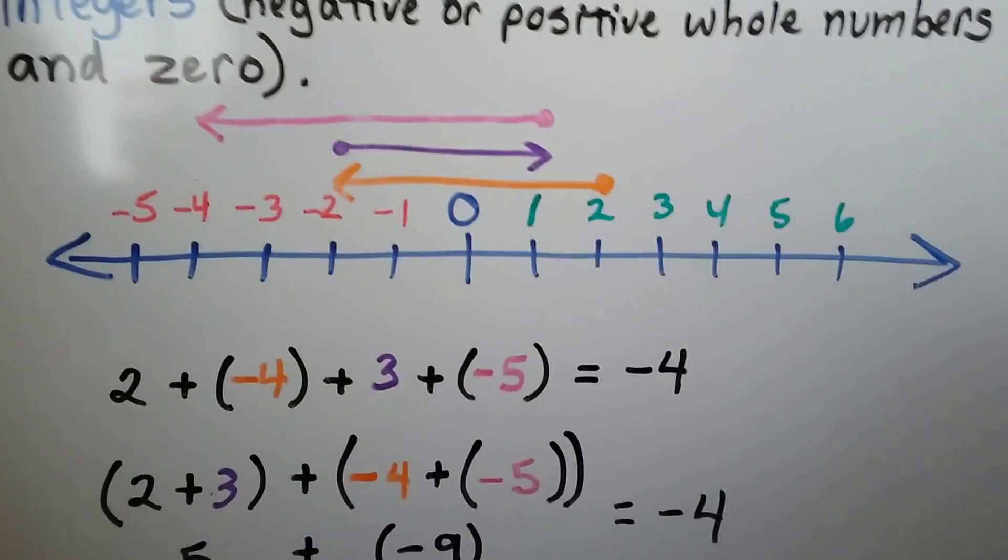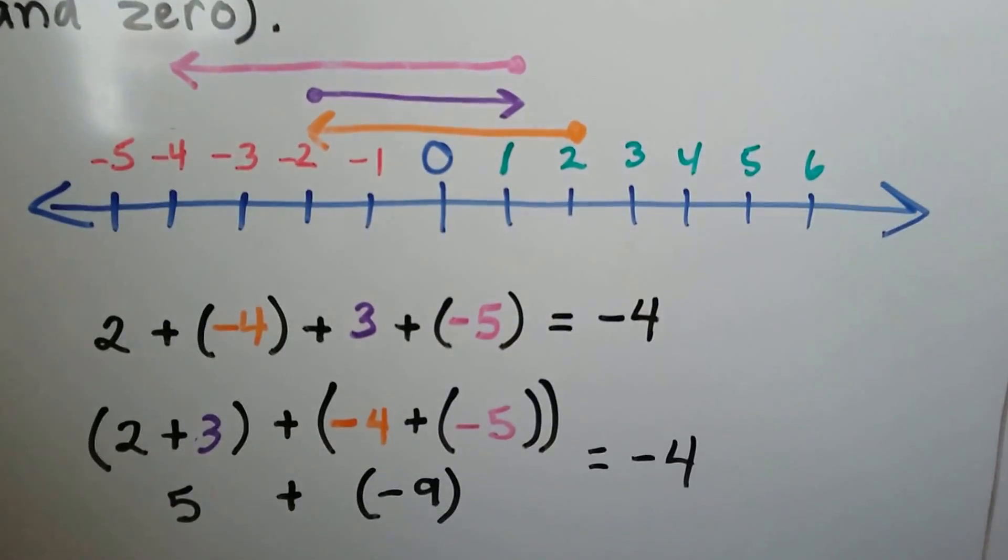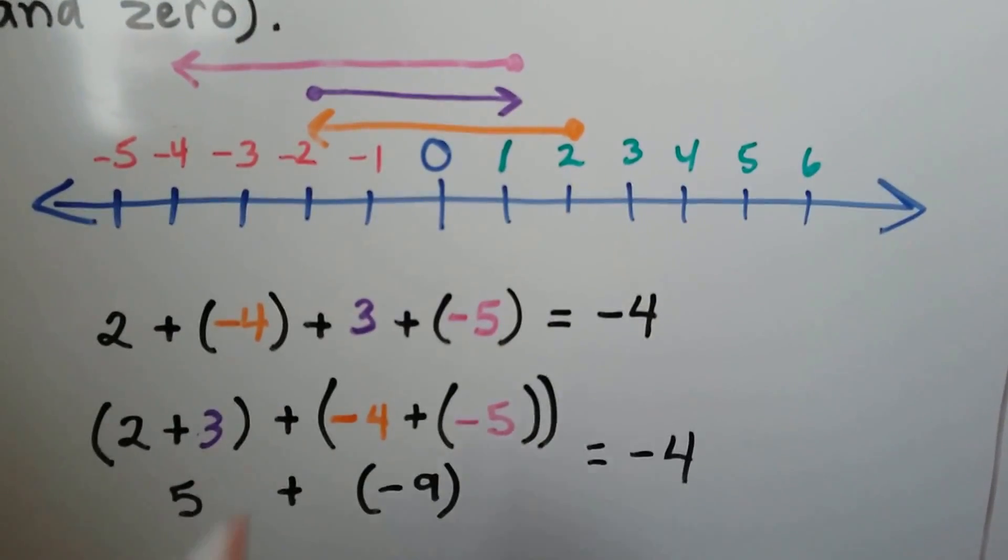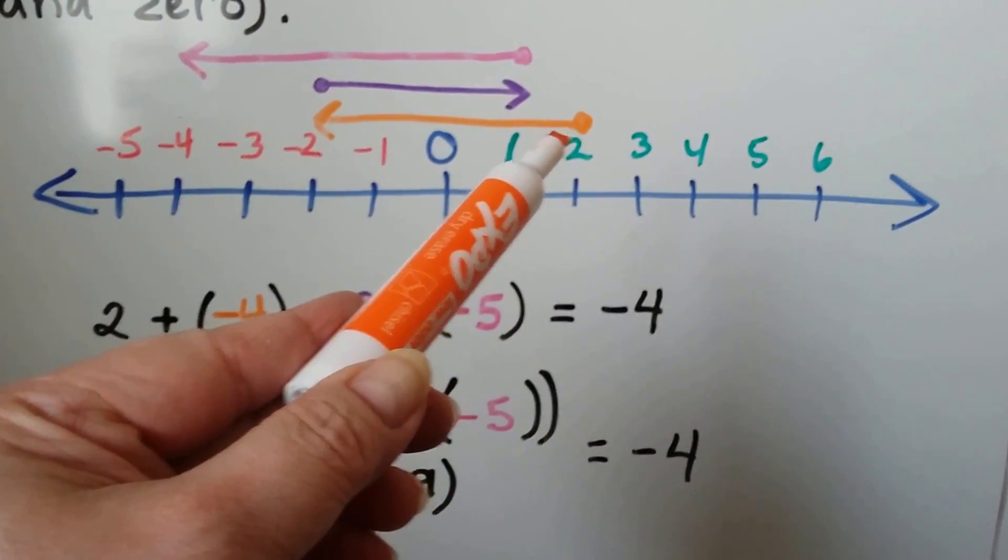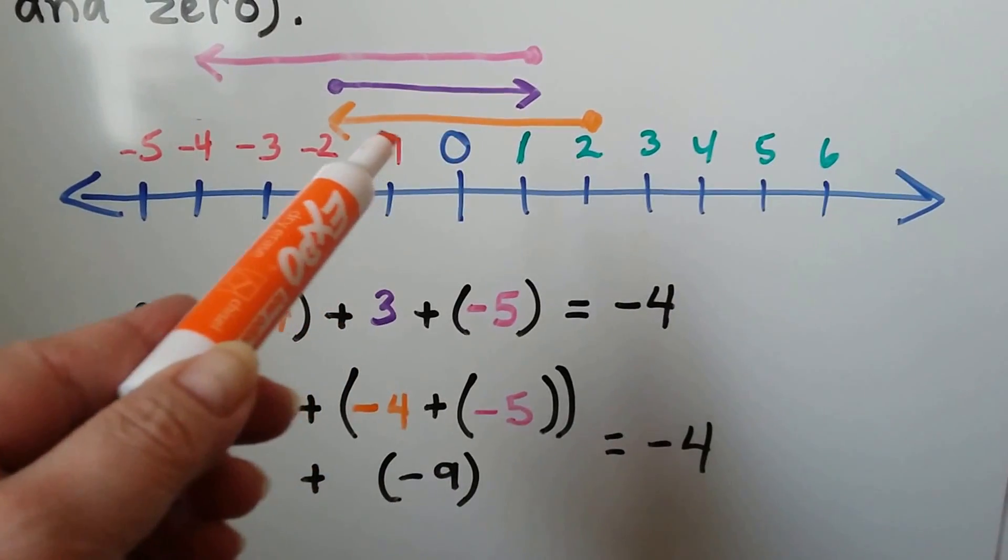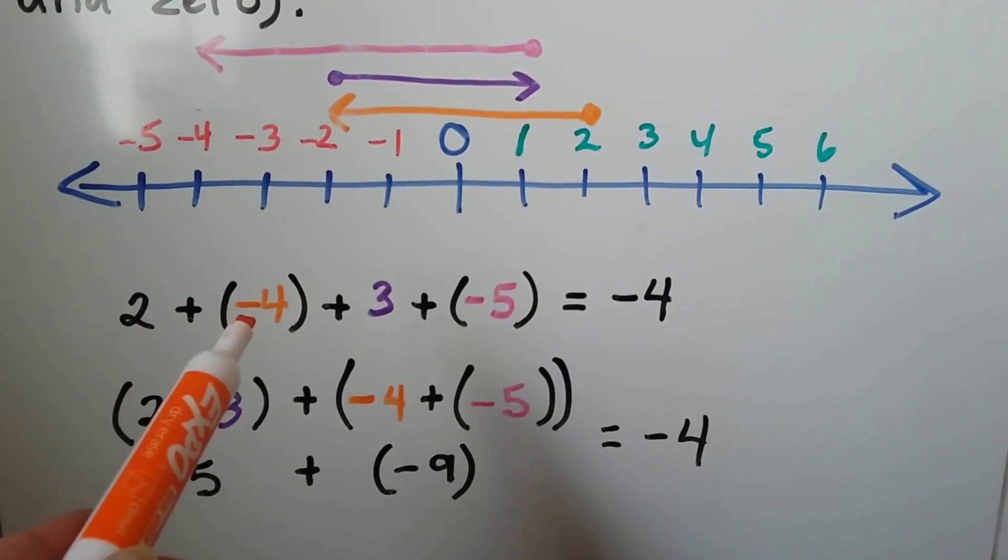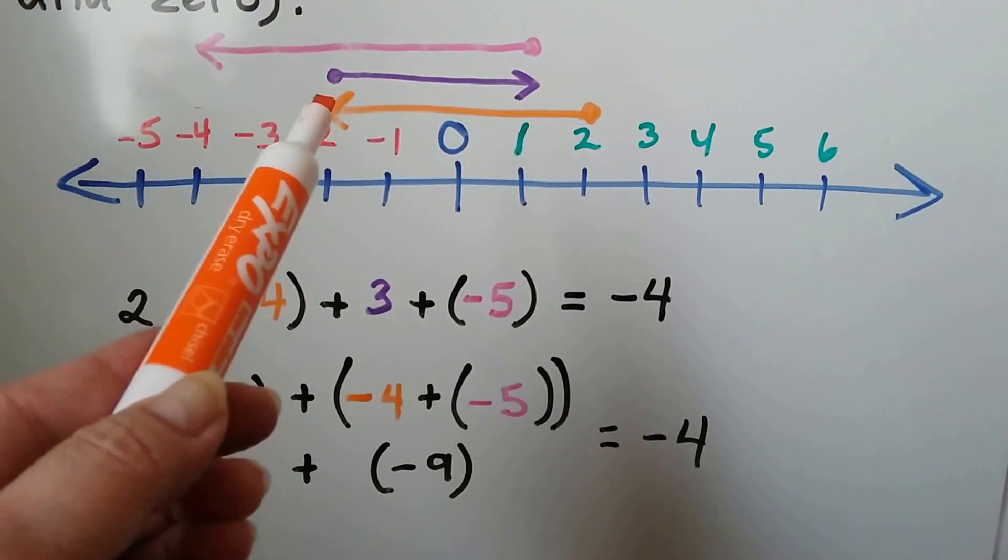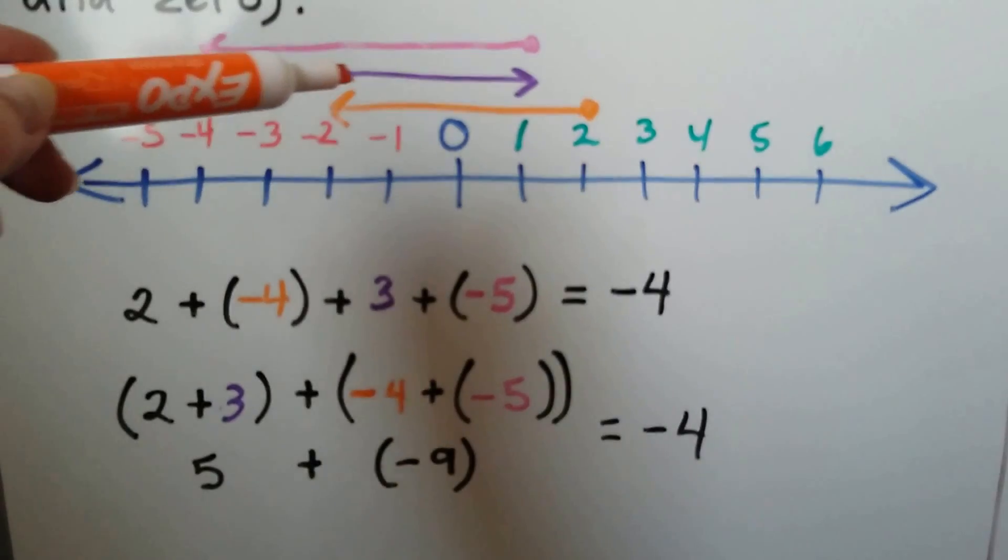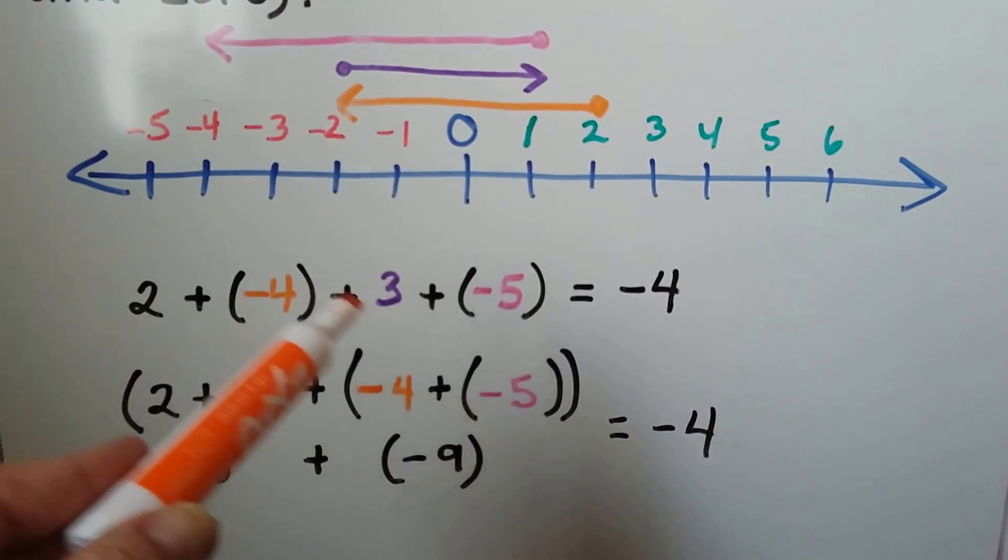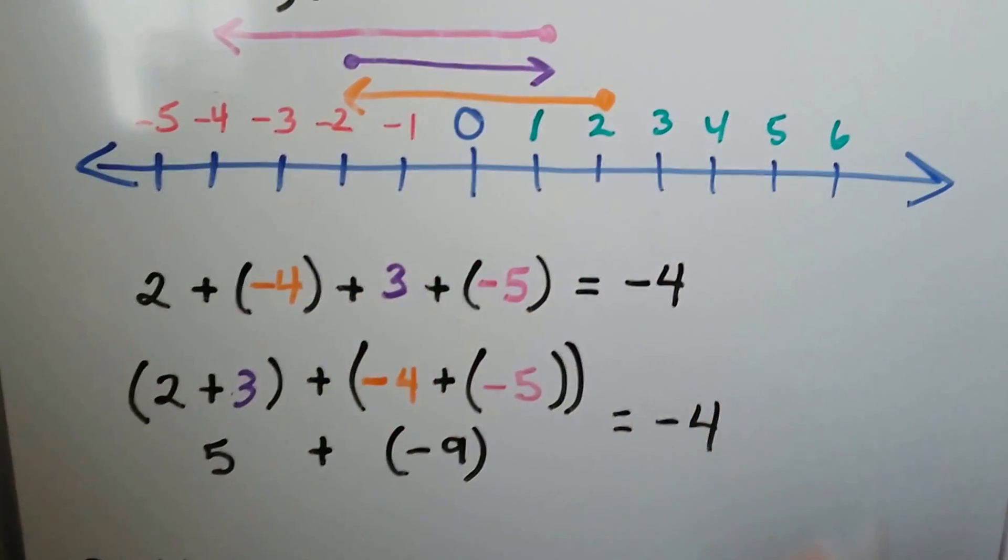So here we've got a number line and you can see I've got some colorful rays drawn above it. To read these we start with the one that's closest to the number line. So we start at a 2 and we're going 1 2 3 4 into the negative. So that means we have 2 plus a negative 4. Then the next line right above it is at the negative 2 and it's going up to the 1. We're adding 3. See 1 2 3 going towards positive. We're adding.